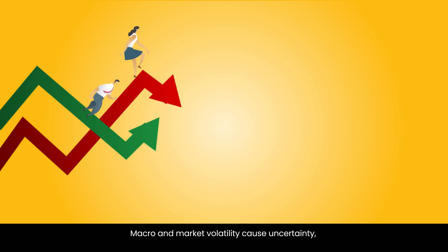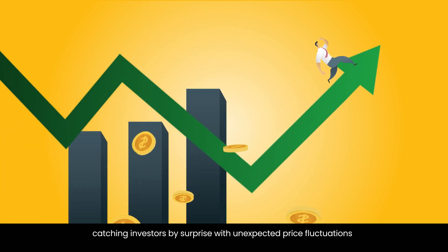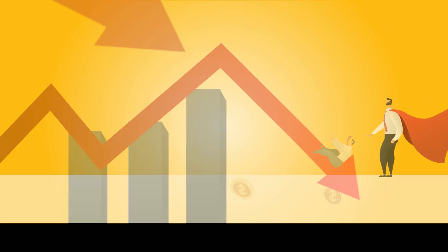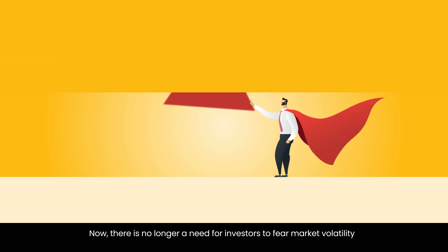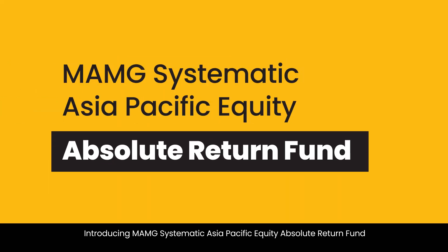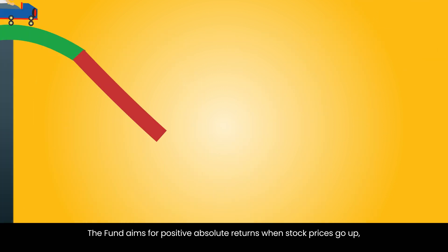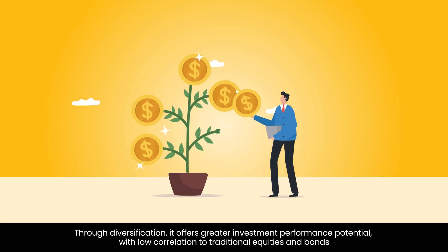Macro and market volatility cause uncertainty, catching investors by surprise with unexpected price fluctuations. There is no longer a need for investors to fear market volatility. Introducing MAMG Systematic Asia-Pacific Equity Absolute Return Fund — the fund aims for positive absolute returns when stock prices go up as well as down, through diversification offering greater investment performance potential.